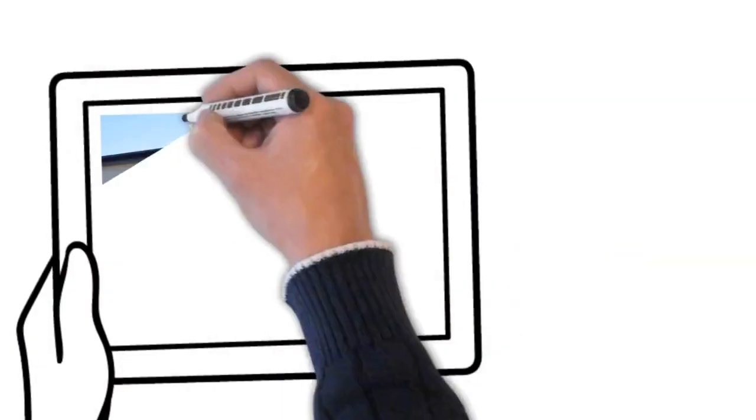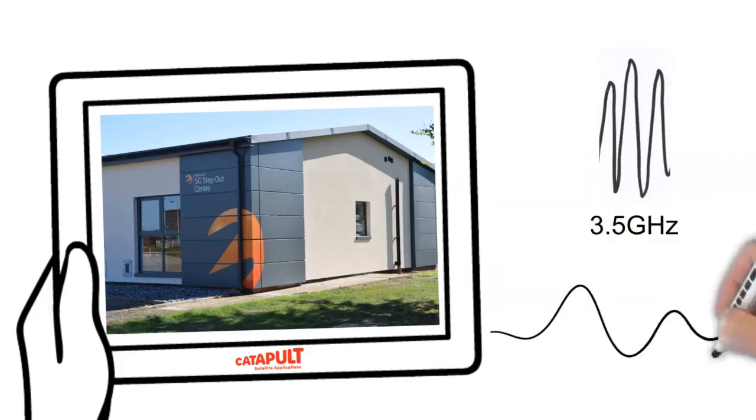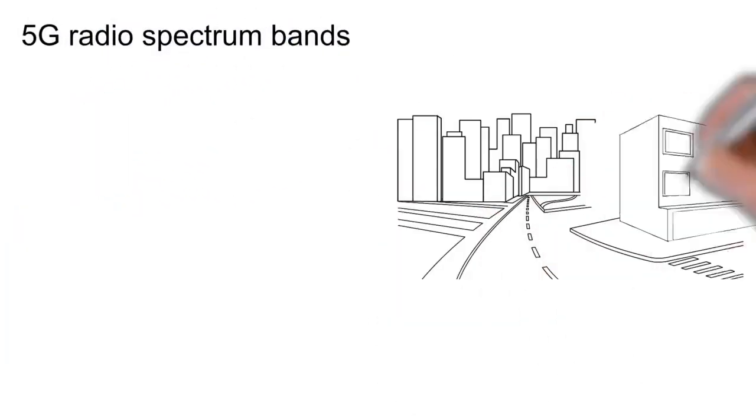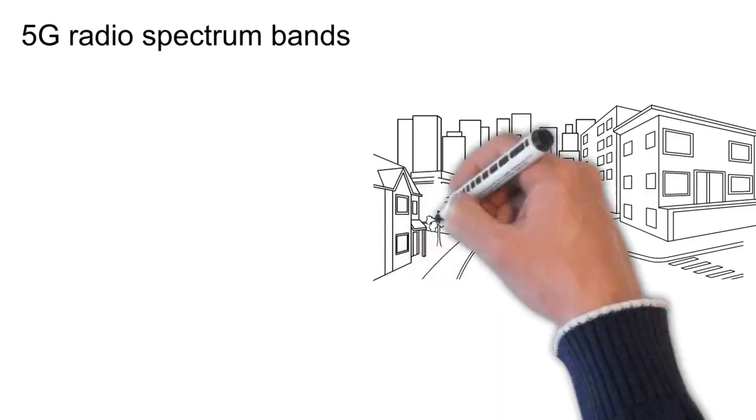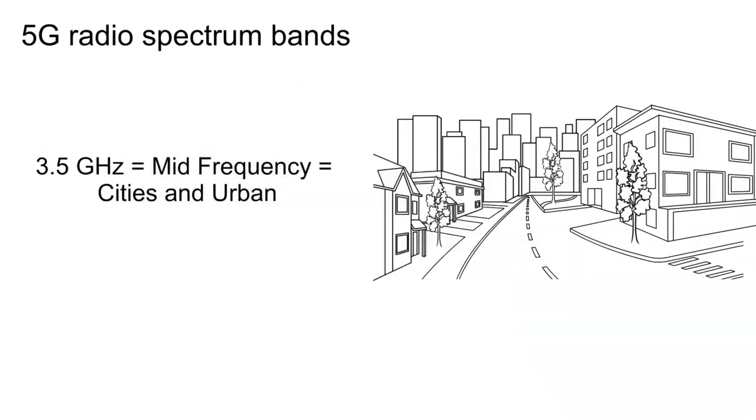At the Catapult's 5G centre, we focus on the 3.5GHz and 700MHz bands. Because 3.5GHz is a mid-band frequency, it provides a good mix of coverage and quality and is ideal for urban areas. 3.5GHz has therefore been widely used for initial 5G rollout.